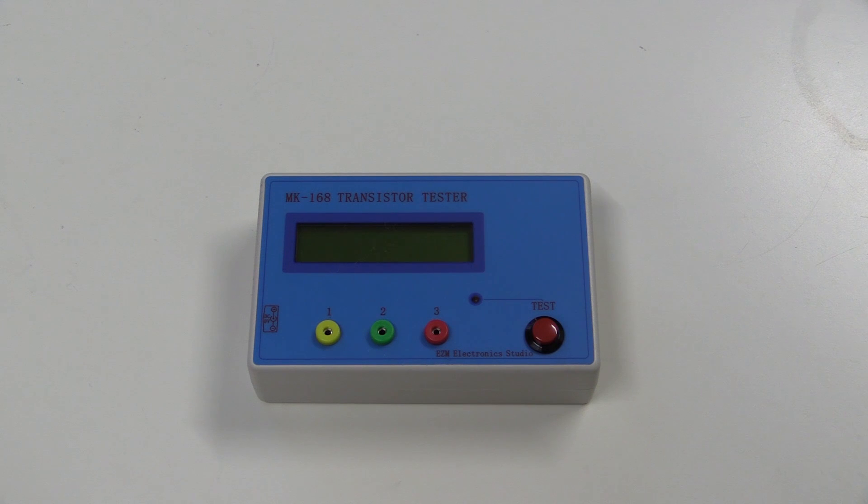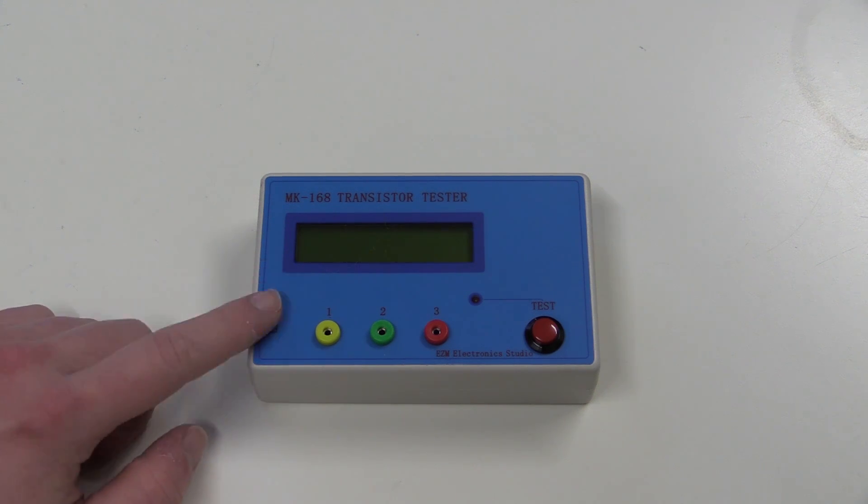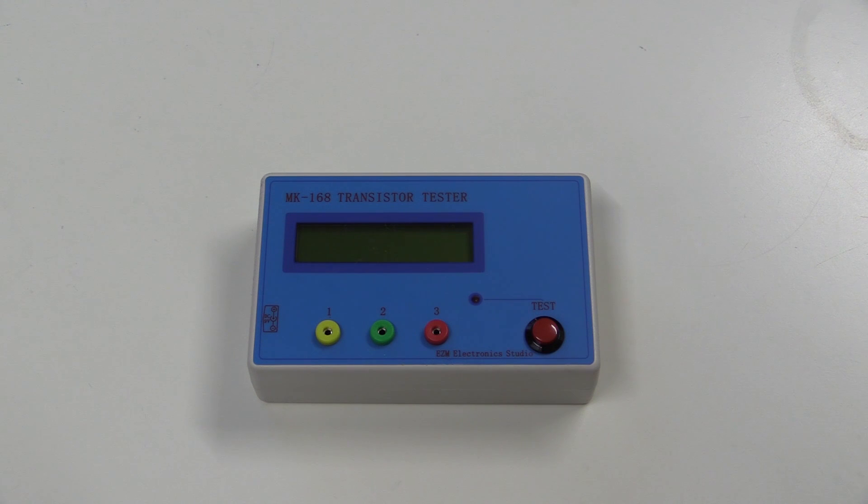This right here is the MK168 transistor tester. However, as we're going to find out, this thing can do a whole lot more than just transistors. This came to me for 32 euros. It may very well be possible to get it for cheaper than that. This one does have the housing. There are versions that just come with a plain circuit board. Also, this shipped to me straight from Germany, so I didn't have to import anything from Hong Kong or wherever. That made things a lot easier and considerably quicker.